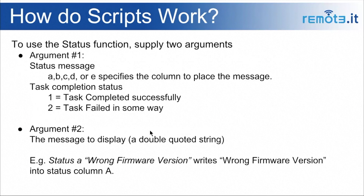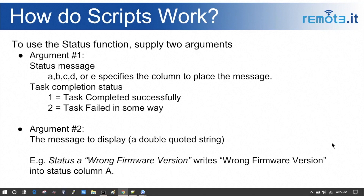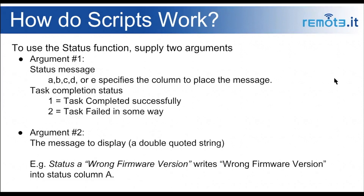The status function in the sample Bash scripts wraps the ConnectD Task Notify call for ease of use. To use the status functions, you need to supply two arguments. The first is for a status message: A, B, C, or D specifies the column to place the message. For task completion status, the first argument is 1 for task completed successfully or 2 for failed. The second argument is the message to display. For example, the command `status A "wrong firmware version"` writes that message into status column A.